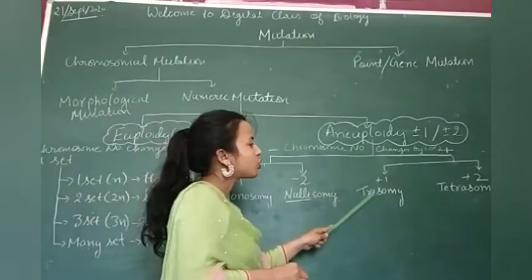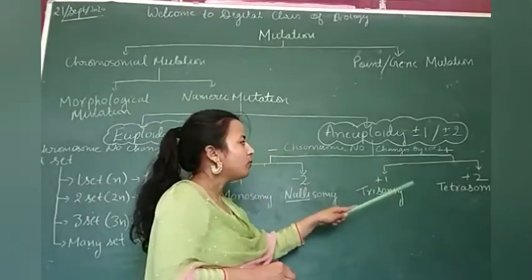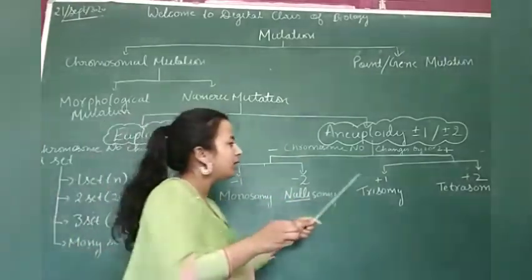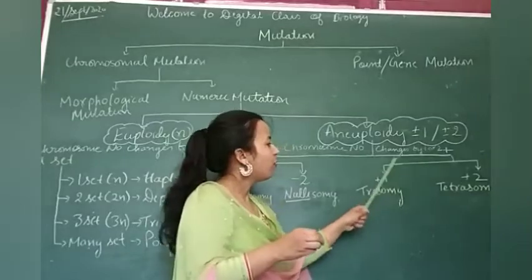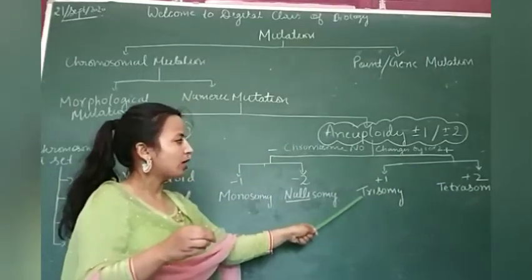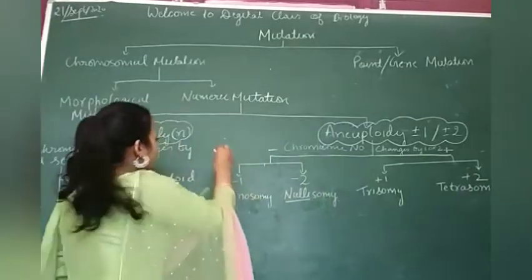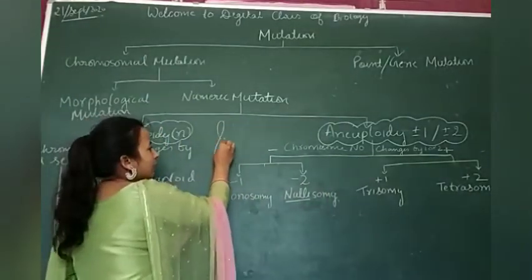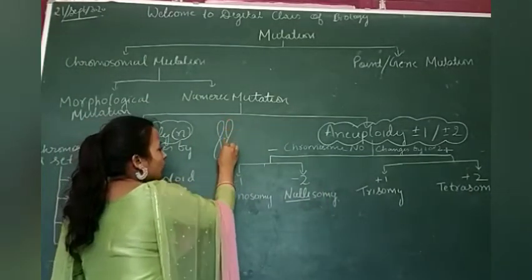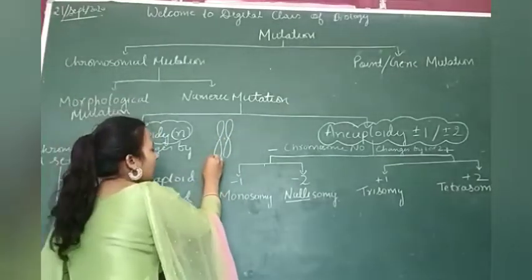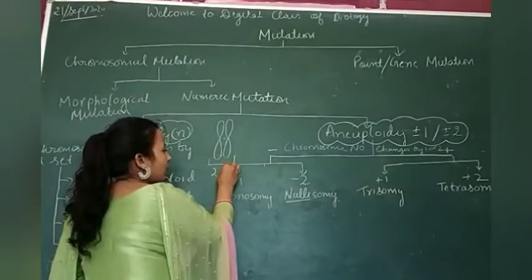Next, it is trisomy and tetrasomy. These are formed when one chromosome is added, either one or two. If one is added, then it is known as trisomy, and if two are added, then it is known as tetrasomy. For example, suppose this is the homologous chromosome that is present in a diploid organism, and suppose it is the twenty-first set.